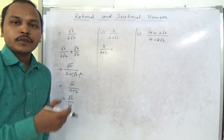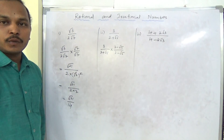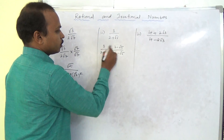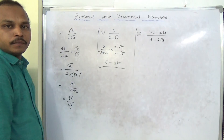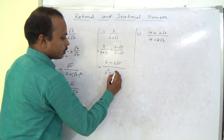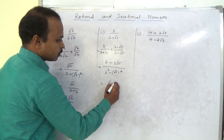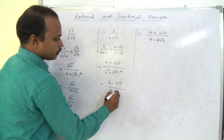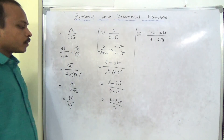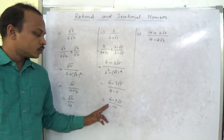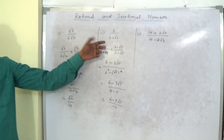With the rationalizing factor we need to multiply and divide: 3 by 2 plus √5, multiplied by 2 minus √5 by 2 minus √5. Multiplying the numerators gives 6 minus 3√5. In the denominator, using the (a+b)(a-b) = a² − b² formula: 2² minus (√5)² = 4 minus 5 = −1. So the answer is 6 minus 3√5 by −1. The denominator is now rationalized.